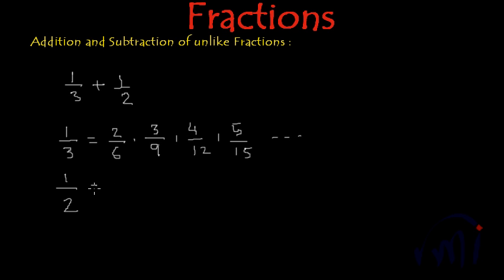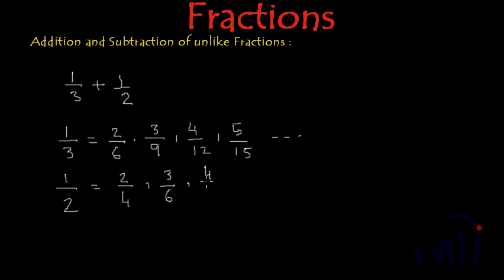And similarly, we can find the equivalent fractions for 1 by 2 also. So if I multiply 1 by 2 by 2 in the numerator and 2 in the denominator, we will get 2 by 4. Multiplying by 3 gives 3 by 6. Multiplying by 4 gives 4 by 8. And multiplying by 5 gives 5 by 10. So these are the equivalent fractions for 1 by 2.